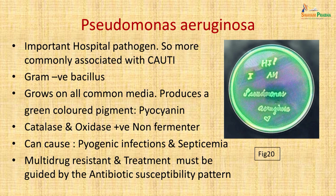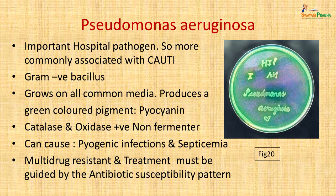Pseudomonas aeruginosa is an important hospital pathogen more commonly associated with catheter-associated UTI (CAUTI). It does not belong to the Enterobacteriaceae. It is a gram-negative bacillus that grows on all common media, producing a characteristic green pigment (pyocyanin) that spreads across the plate. It is catalase and oxidase positive and a non-fermenter. It causes pyogenic infections and septicemia, is usually multi-drug resistant, and treatment must be entirely guided by antibiotic susceptibility pattern.